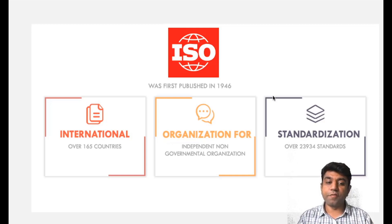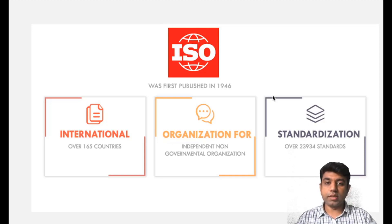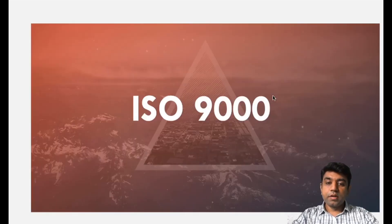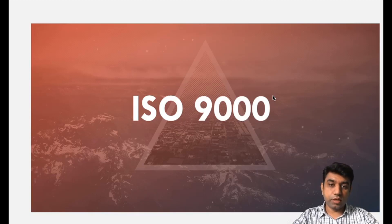Up till now, they have formed 23,934 standards in the ISO, and this number is also increasing year by year. If you are watching this video in a later year, this figure may have crossed the 25,000 benchmark. Now, in today's class we will understand ISO 9000. In our syllabus, we are going to discuss ISO 9000, ISO 14000, and QS 9000. Let's get started with ISO 9000.